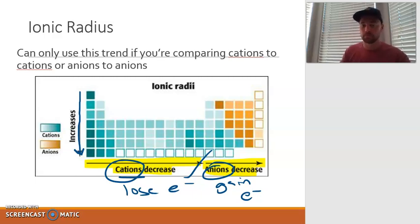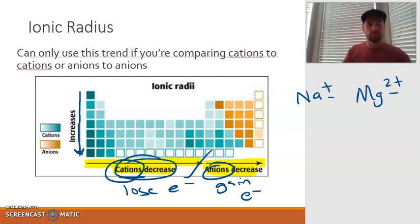For example, if I was to ask you to compare the size of the sodium atom compared to the size of the magnesium atom, both of them are positive. So I can use this trend. I can say, alright, between these two, which one is the larger one? Sodium would be the larger ion out of these two because sodium is further to the left. It would be right here, whereas magnesium is right here.